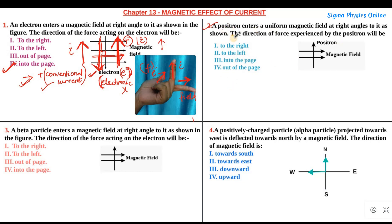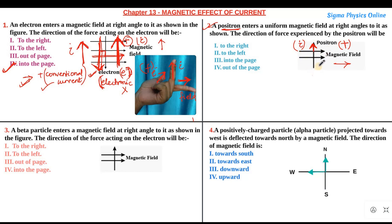In this question the particle given is a positron. We know that a positron is a positively charged particle, so this makes our question very easy. The magnetic field direction is given to the right, and the positron — a positively charged particle — is moving upwards. So the current direction will be upwards, as the current direction is the direction in which the positive charges are moving. We simply point our middle finger upward to represent the direction of the current.